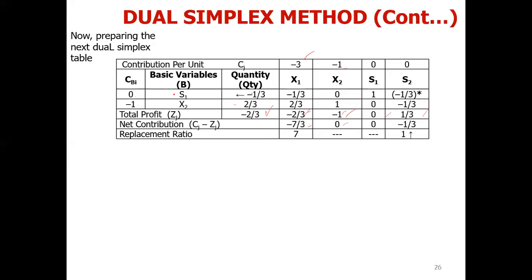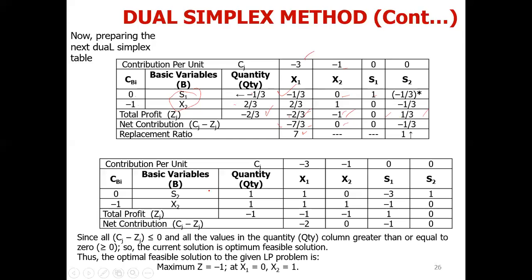Again, we decide which variable would leave. The most negative right-hand side quantity is against S1, so S1 will leave. Now we do the ratios: CJ minus ZJ divided by pivot row elements. Minus 7/3 divided by minus 1/3 gives 7. Then minus 1/3 divided by minus 1/3 gives positive 1. The minimum ratio is 1, which means S2 will be entered into the place of S1.